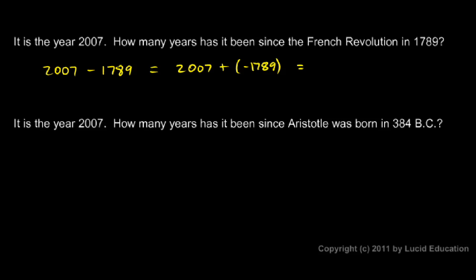And basically what we have to do to add these two numbers, we take note that one is positive and one is negative, so we just subtract. And our answer will be positive because the bigger of the two numbers, the 2007, is positive.